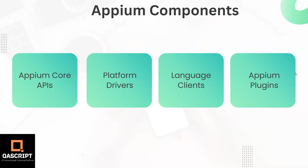Coming to the different components which are part of the APM project, some of the main components are the APM core APIs, the platform drivers, the language clients, and the APM plugins. The APM core APIs contain all the APIs which are used within APM — these are the standard APIs through which you can automate different apps on different platforms. APM also consists of different platform drivers: iOS would have its own driver, Android would have its own driver, and a browser would have its own driver. Using these drivers, APM can drive the automation on a specific platform.